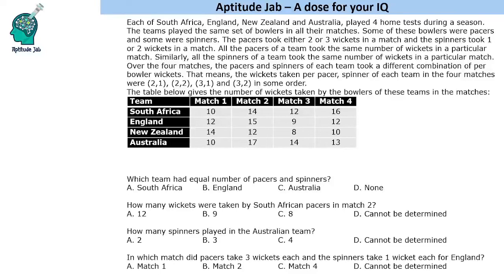Hello everyone, welcome to Aptitude Jab. This set is a sort of logical data set. It says that there are four teams — South Africa, England, New Zealand, Australia — they played four home tests during a season, not among themselves, maybe with any other teams.